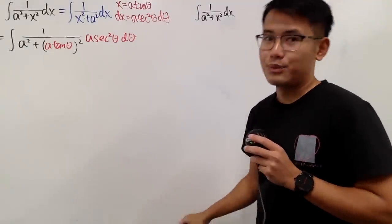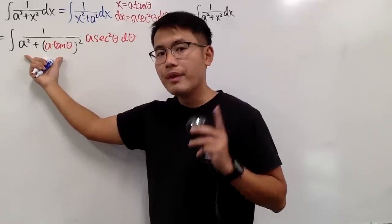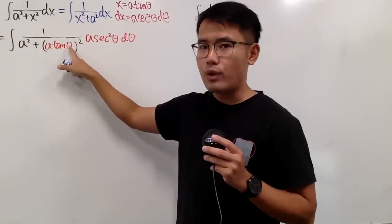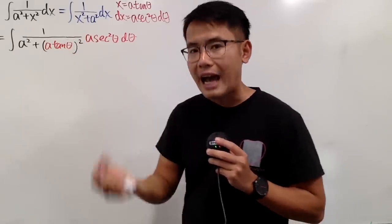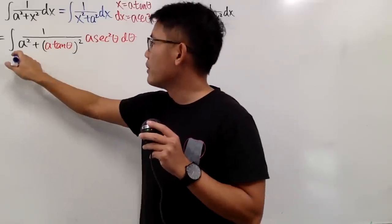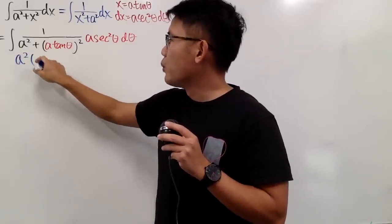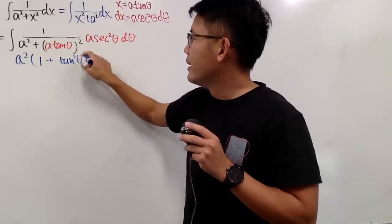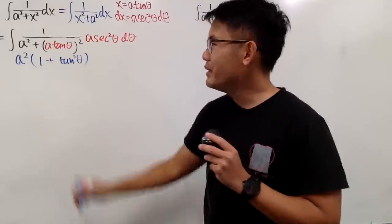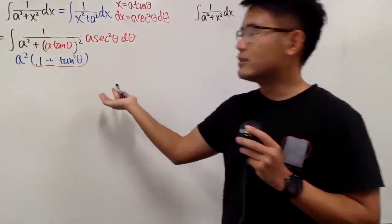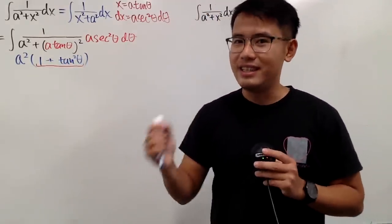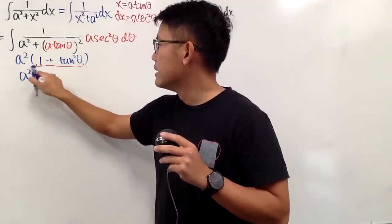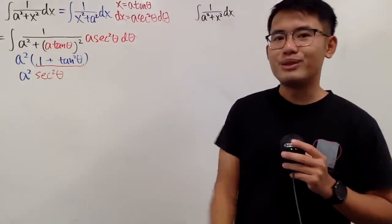Now let's work this out. Notice we have a squared plus a squared times tangent squared theta. Both terms have the a squared, therefore I can factor out the a squared. This gives me 1 plus tangent squared theta. And the most wonderful thing is that 1 plus tangent squared theta is nothing but secant squared theta, thanks to the identity. So I will write this as a squared times secant squared theta.